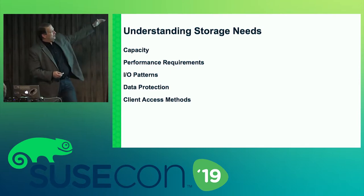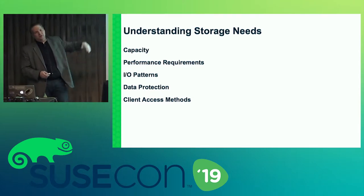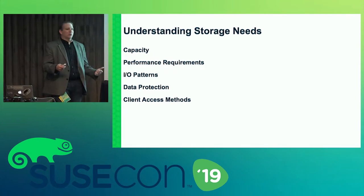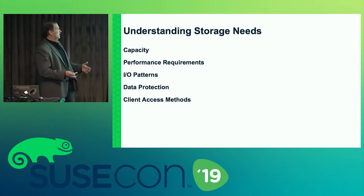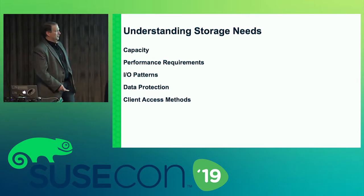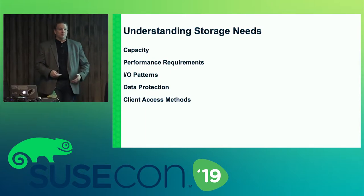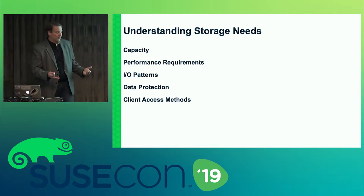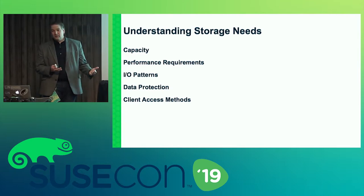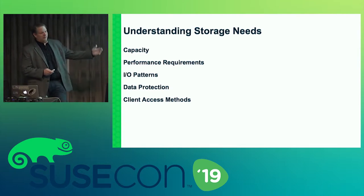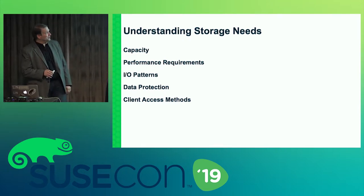We have to think in terms of what each environment looks like — what's the performance requirement? Is it small IOs in random IO patterns, or large sequential writes? What kind of data protection is required? For S3-type workloads, we try to do erasure coding wherever possible — it's much more efficient. For lower-performing file and block workloads, we can do erasure coding now as well. And then obviously client access method: block, file, or object.